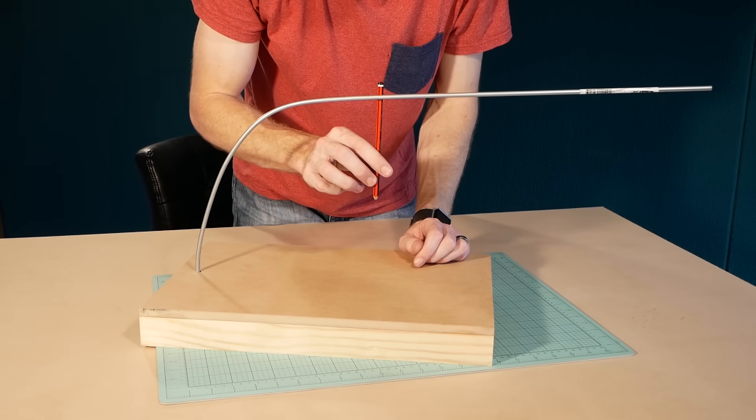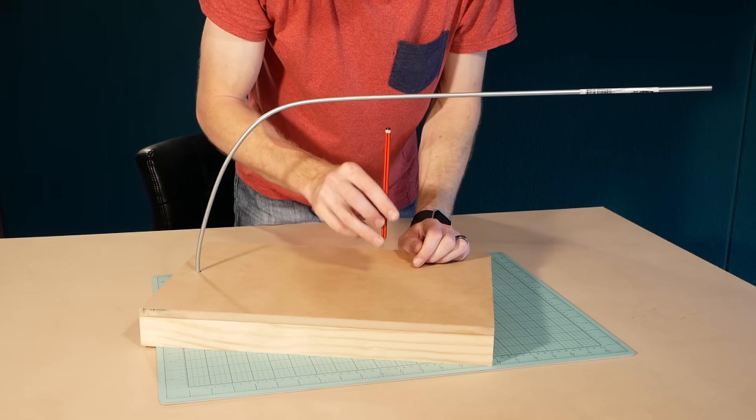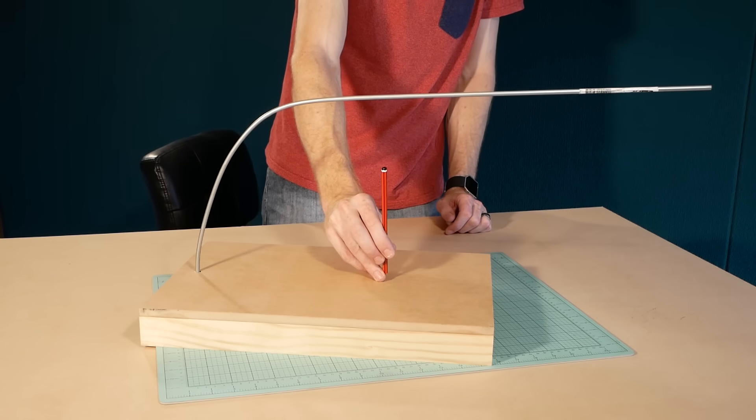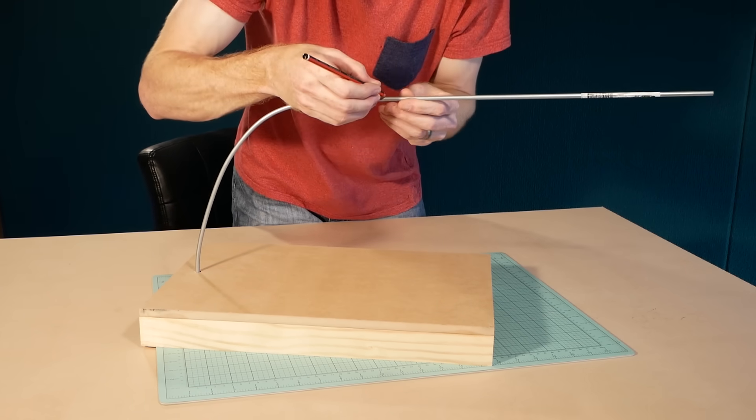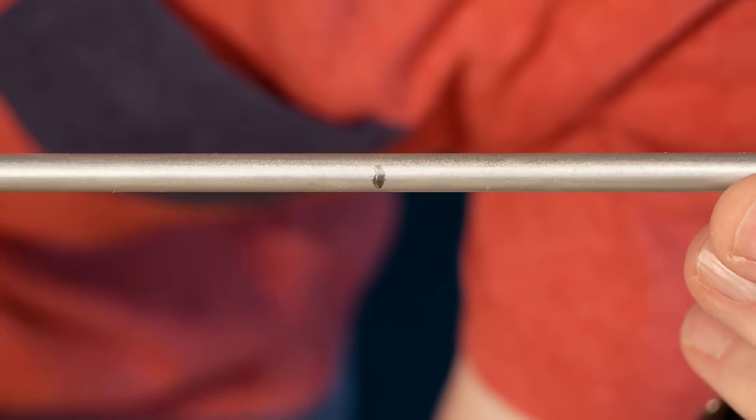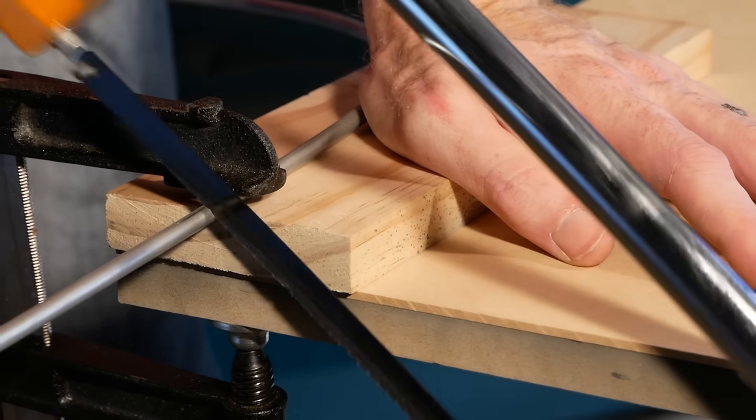Now I need to remove the excess rod. I just eyeball the position where I want the nichrome wire to connect to the bottom of the board. This is the point where the wire will drop vertically down from the rod and go to the underside of the board. Then I cut away the excess and file the end clean.